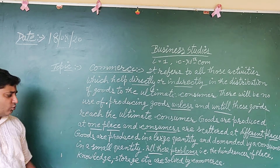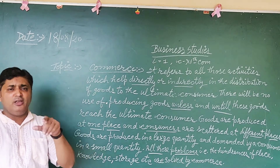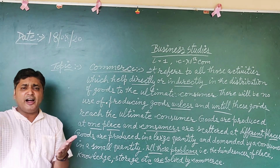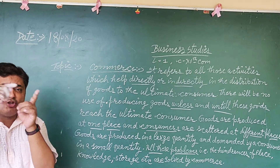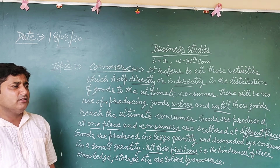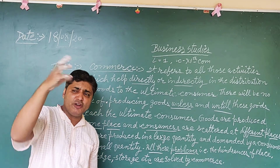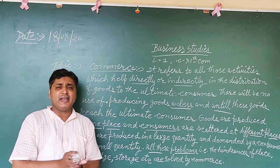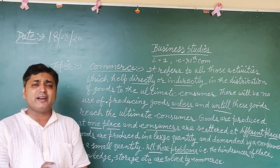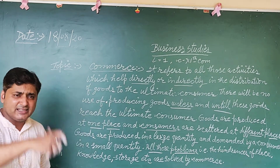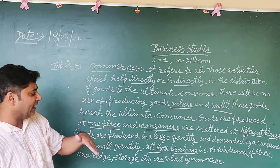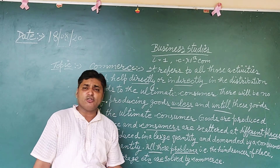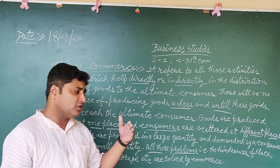The next step is storage. After the manufacturing of goods, when raw material is converted into finished goods, the finished goods are stored in warehouses. The producer stores them in the warehouse to provide safety until demand from the consumer arises in the market. This hindrance of storage is also removed under commerce. All these hindrances and problems are solved by commerce.